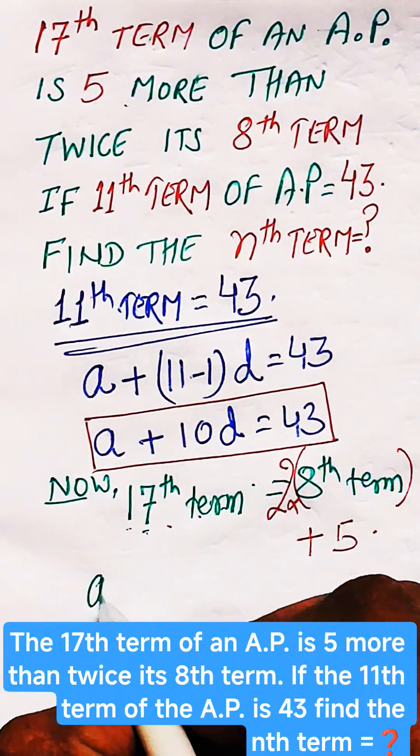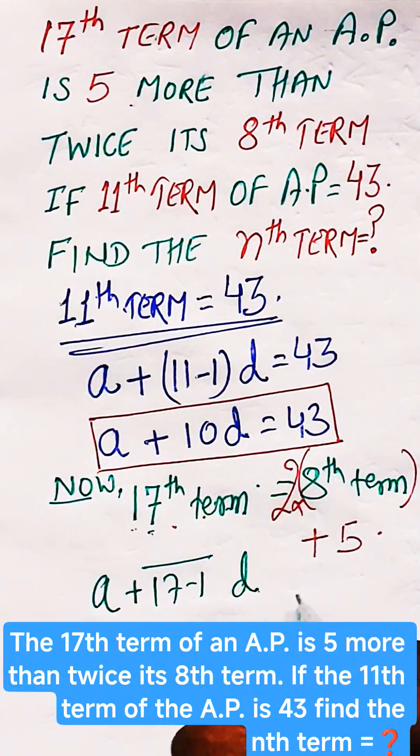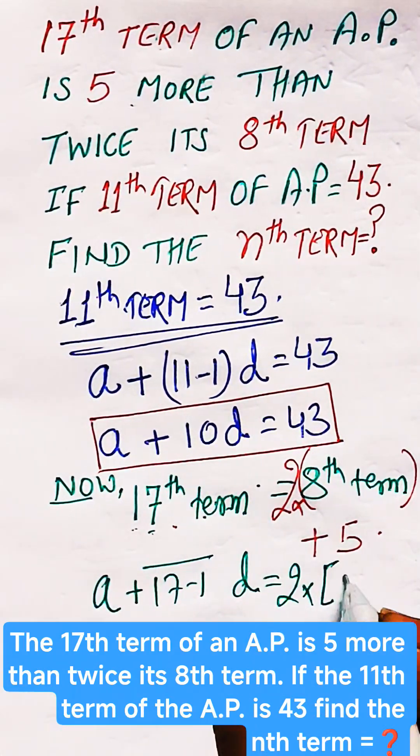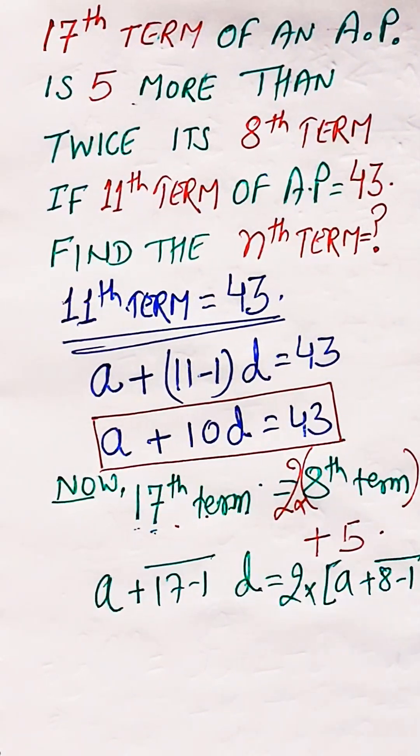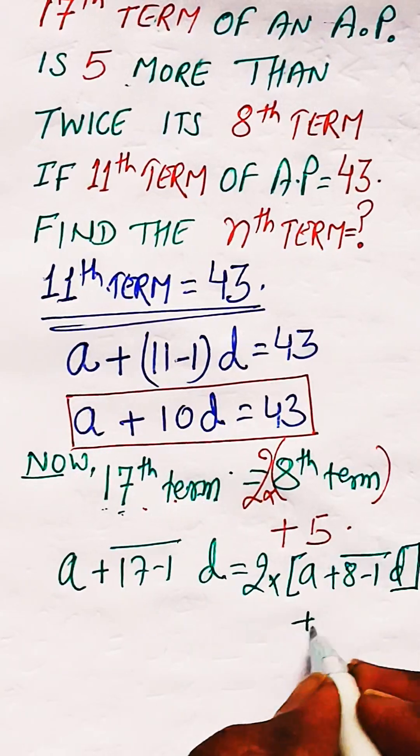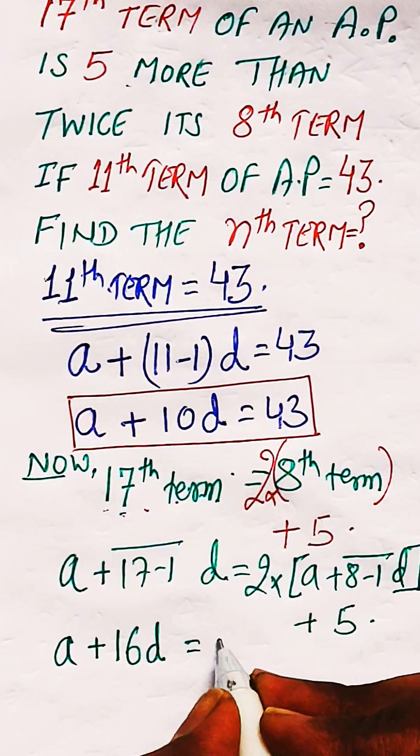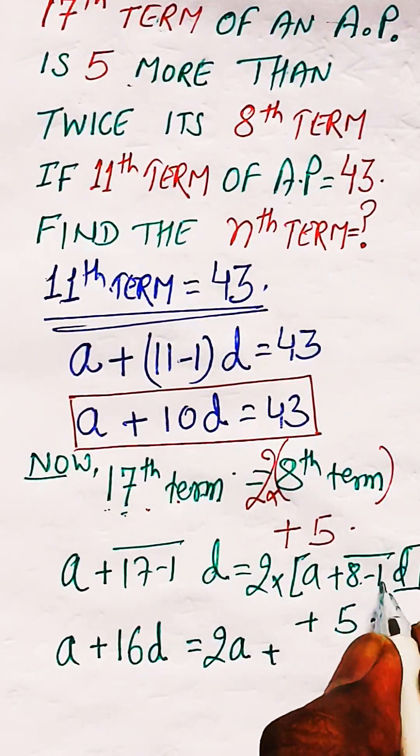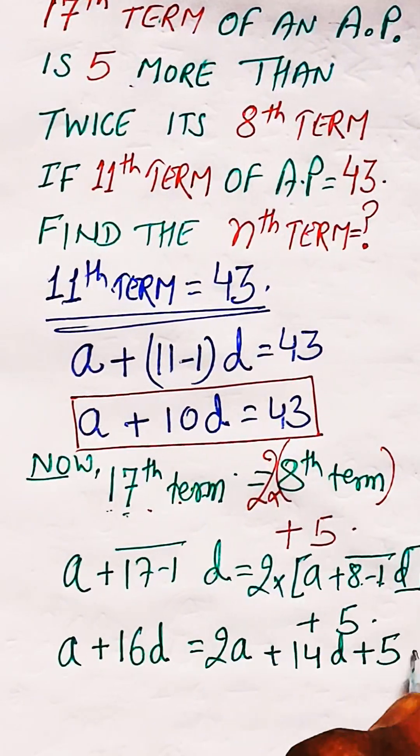The 17th term can be written as A plus (17 minus 1) into D, which equals 2 times the 8th term, that is A plus (8 minus 1) into D, plus 5. This gives you on simplification: A plus 16D equals 2A plus 14D plus 5, which simplifies to A plus 5 minus 2D.